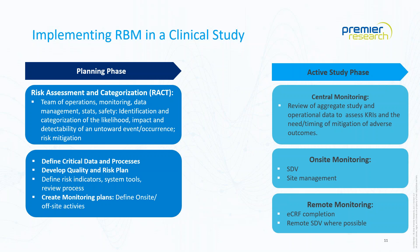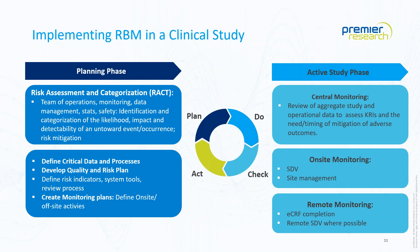This is a typical plan-do-check-act cycle. You plan, you execute, then you do a sanity check and adjust your plans — perhaps your risk indicators were too broad or too limited. This is a living process throughout the study, but it will give you a wonderful grip on your study data.